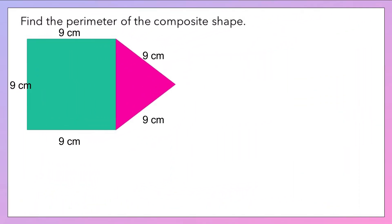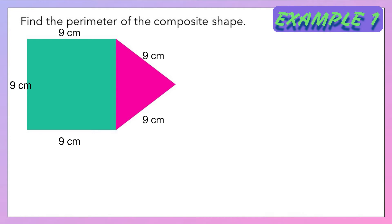Look at this diagram — we have an equilateral triangle and a square. To find the perimeter we need to find the total length of the outer sides. Before that, we determine one side as a starting point, and remember: add up all the sides and you must come back to the starting point.